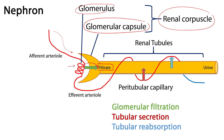Cortical radiate arteries give off afferent arterioles. These afferent arterioles conduct blood to the glomerulus, where filtrate is produced. Coming out of the glomerulus are efferent arterioles, which feed into both peritubular capillaries and specialized peritubular capillaries called vasa recta. These capillaries completely ensconce the nephron tubules and allow exchange of materials between the filtrate and the cardiovascular system.